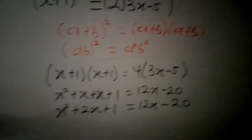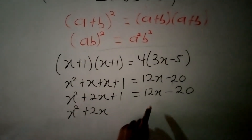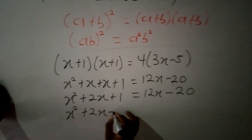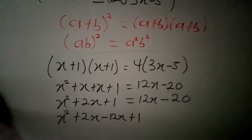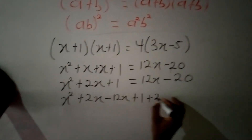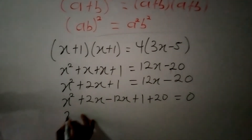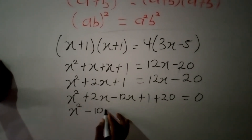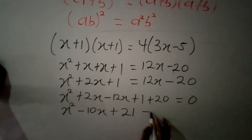Now collecting like terms: I send positive 12x across the equals sign, becoming negative 12x, giving me x squared plus 2x minus 12x, and I send negative 20 across, giving me positive 20, equal to 0. So I now have x squared minus 10x plus 21 equal to 0. We now have a quadratic equation and we need to solve for x.